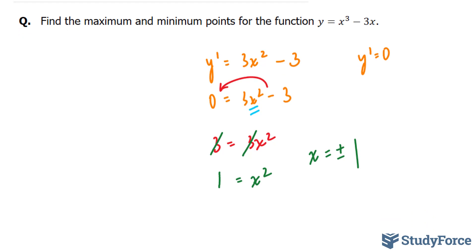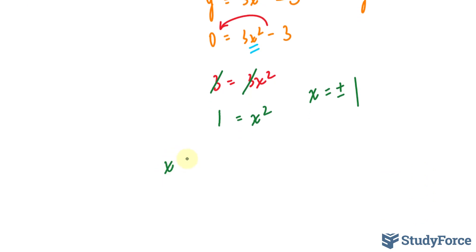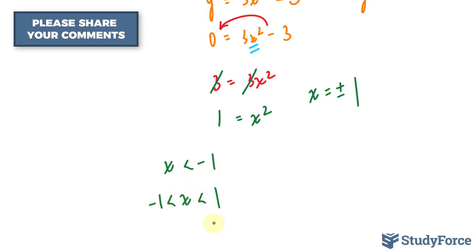So to do this I'll create a small chart when x is less than negative 1, when x is between negative 1 and positive 1, and when x is greater than 1.